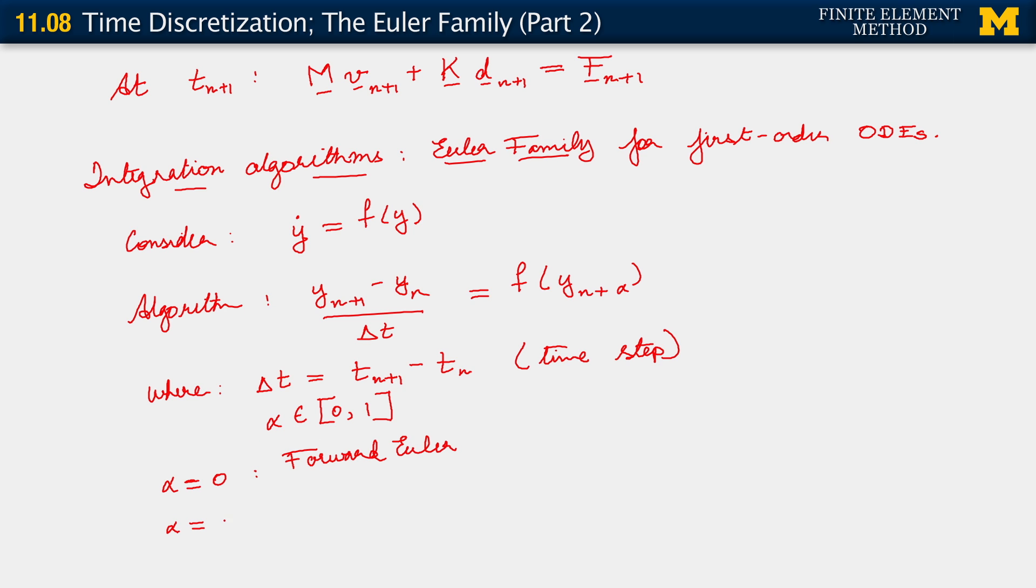Alpha equals 1 is called backward Euler. And alpha equals half is called various things. I will tend to call it the midpoint rule. It's also sometimes called the Crank-Nicholson method. So those are special members of the Euler family.